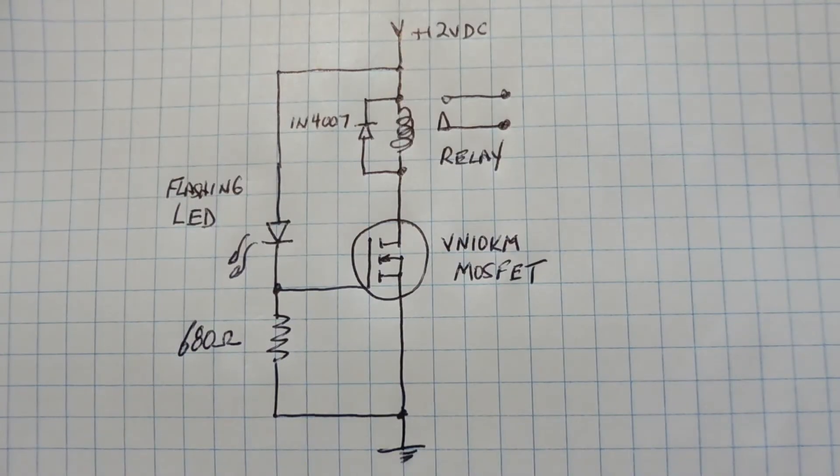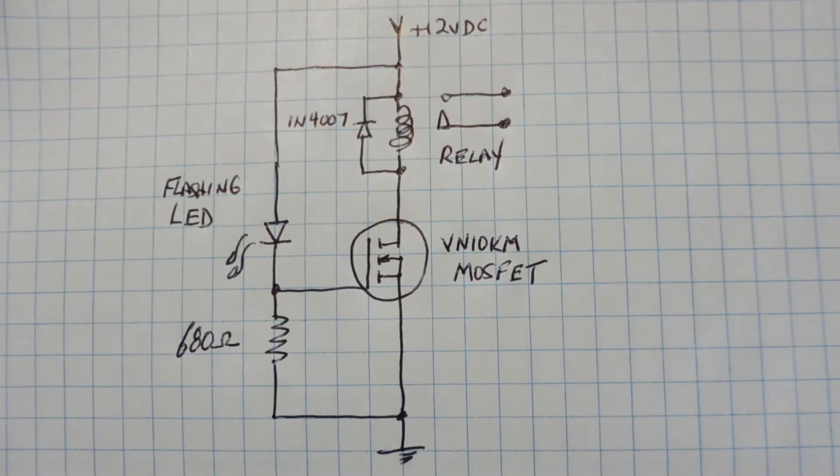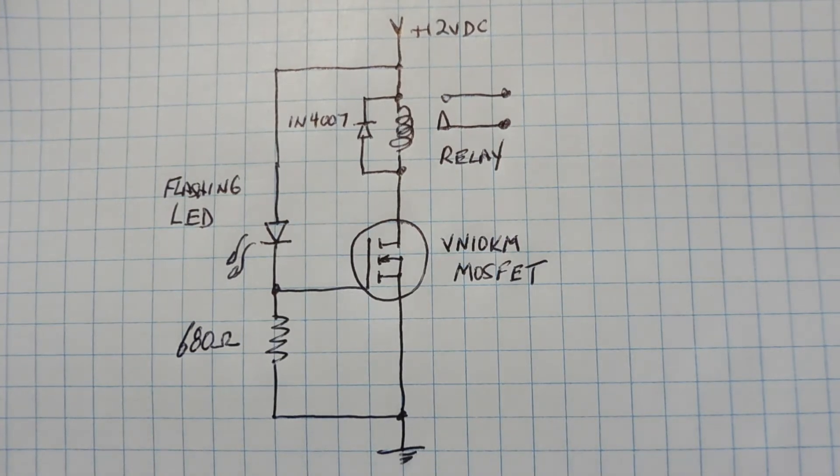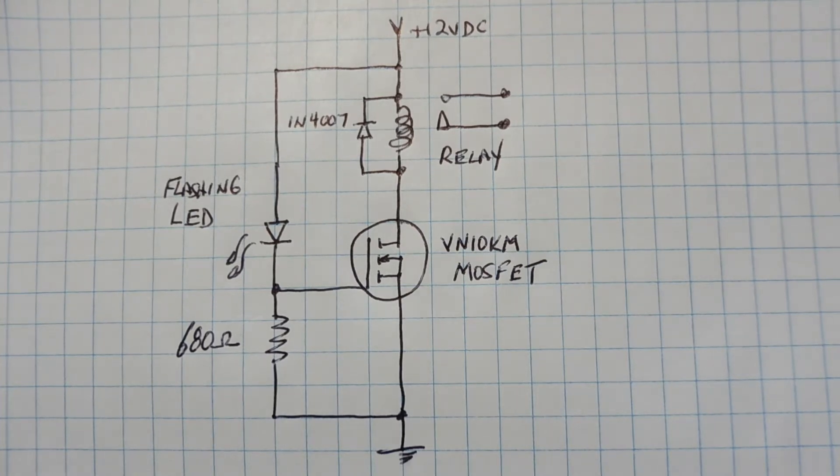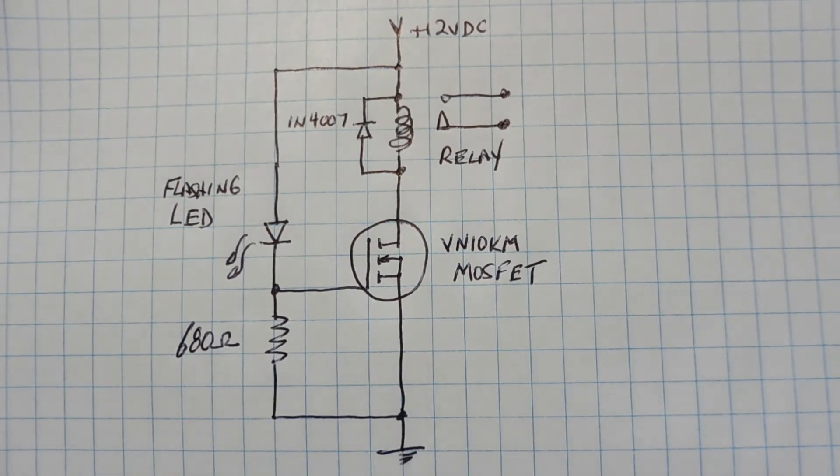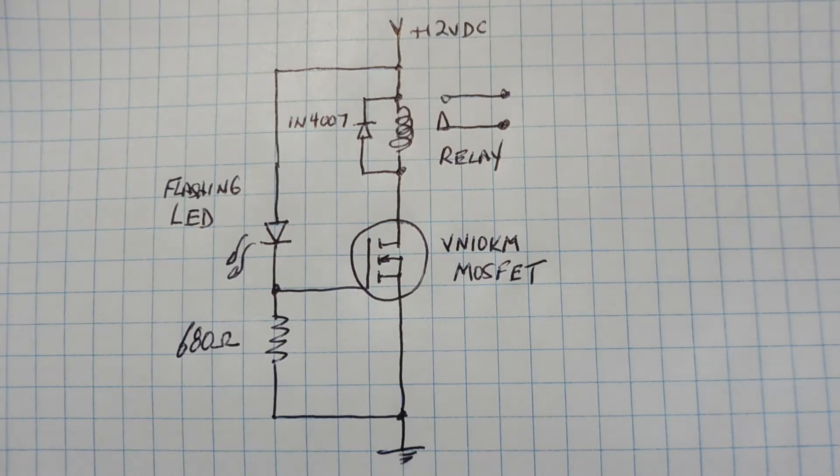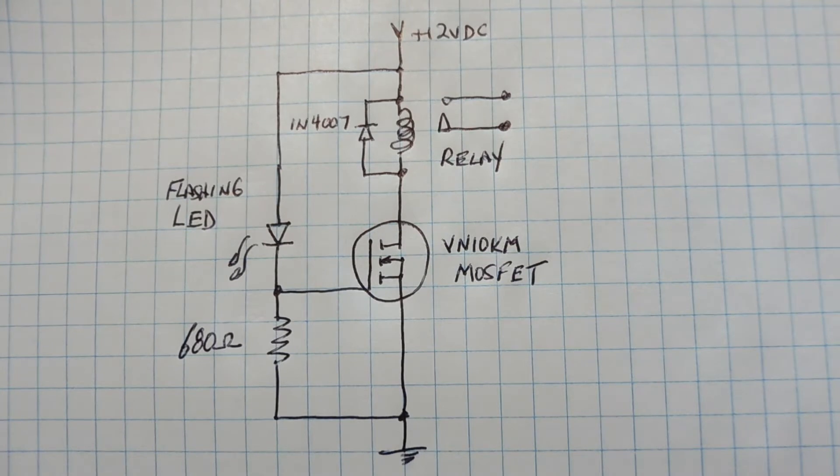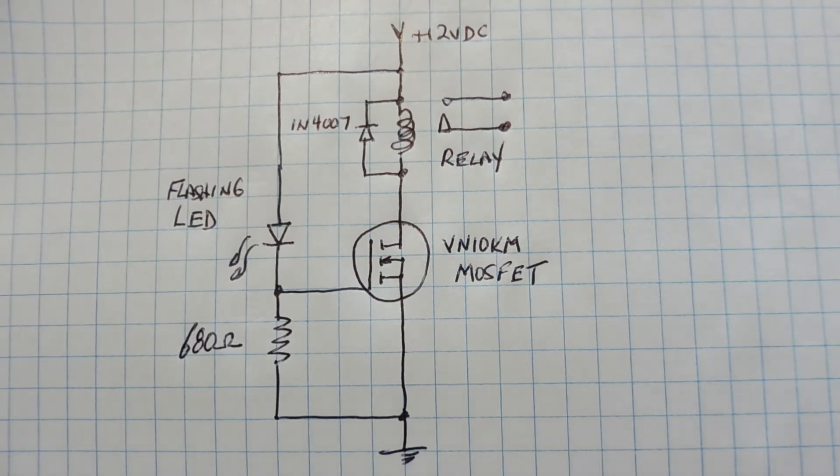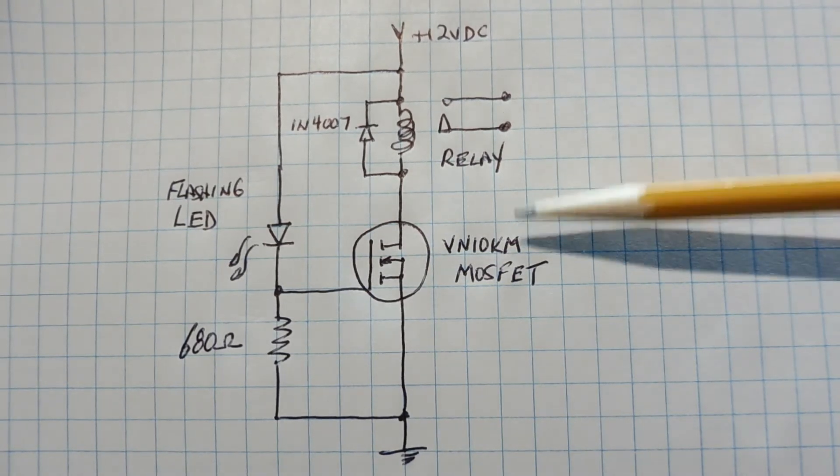Okay, here's the schematic diagram of the circuit that I built on my breadboard. Now this is the flashing LED driving a relay circuit. Now to drive a standard relay that has a coil resistance of about 120 ohms, we need a buffer to drive the relay because the flashing LED doesn't have enough current drive to drive a standard relay. So we're using a MOSFET, a VN10KM, to drive the relay.